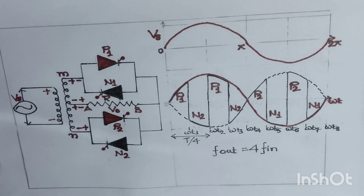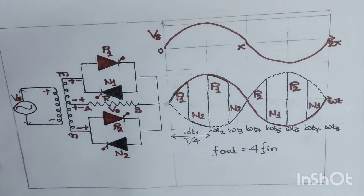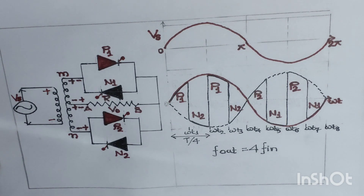This cycloconverter can be defined in two types: step-up cycloconverter and step-down cycloconverter. In a step-up cycloconverter, the output frequency is more than the input frequency. If the output frequency is less than the input frequency, then we call it a step-down cycloconverter.